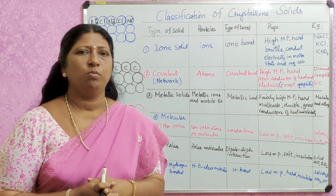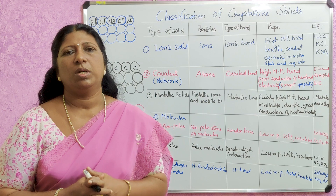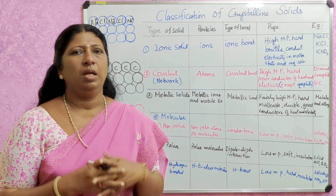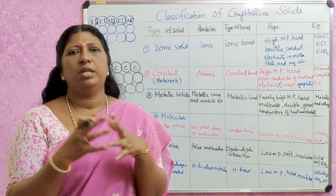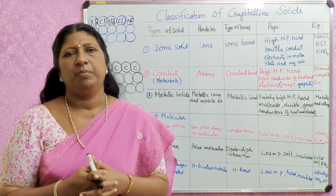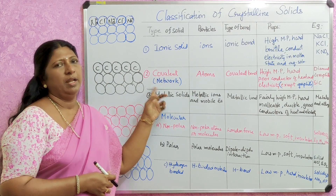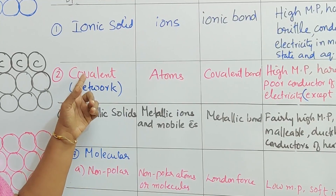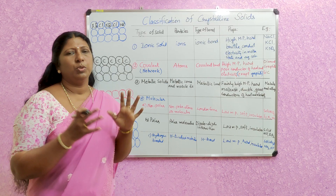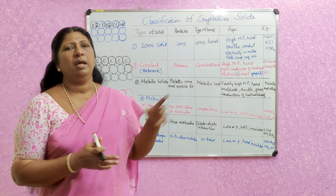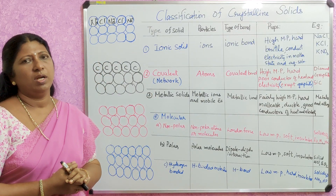Some solids form bonds like diamond and graphite structures, forming a network solid. That type of solid is also called network solid. A covalent solid is called network solid due to its network structure. What are the constituent particles in covalent solids?